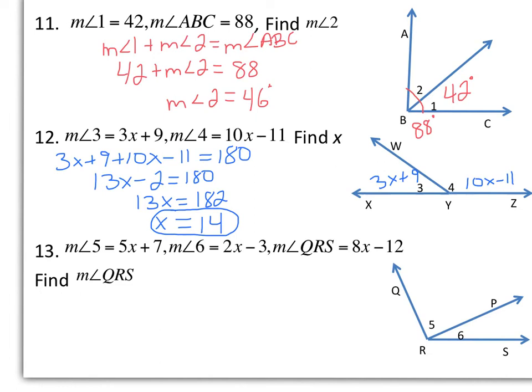And lastly, number 13. The measure of angle 5 is 5X plus 7. Measure of angle 6 is 2X minus 3. And our whole angle QRS is 8X minus 12. So similar to our first one, we can add up our two smaller angles and set equal to our entire angle. And the final question here is we need to find the measure of angle QRS. All right, so our equation can say 5X plus 7 plus 2X minus 3 equals 8X minus 12.